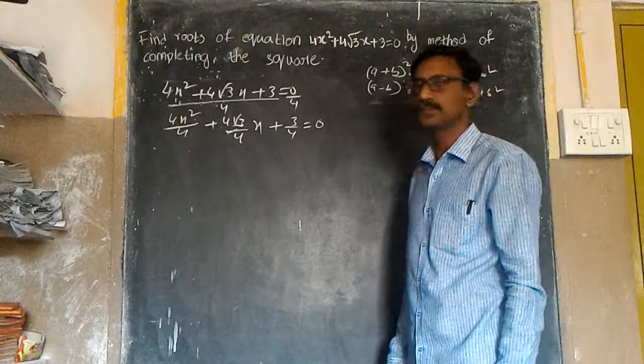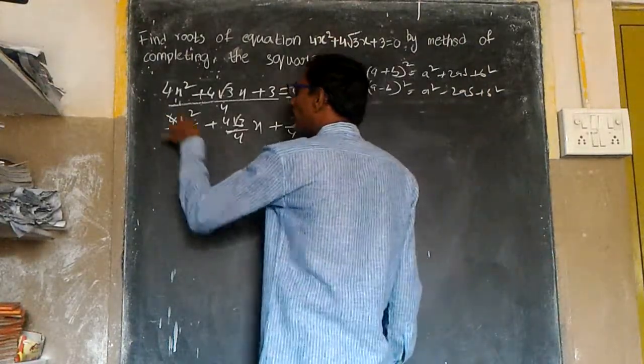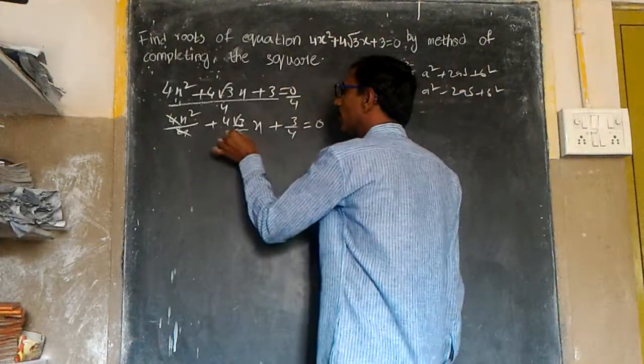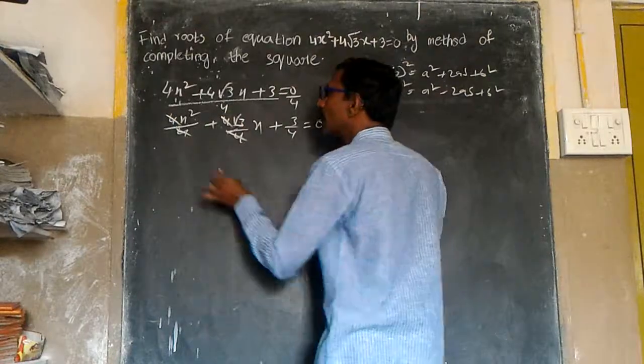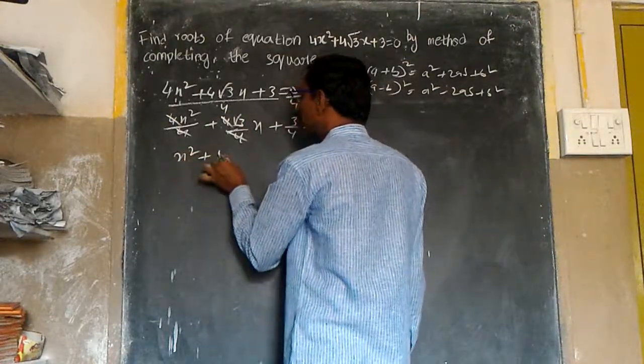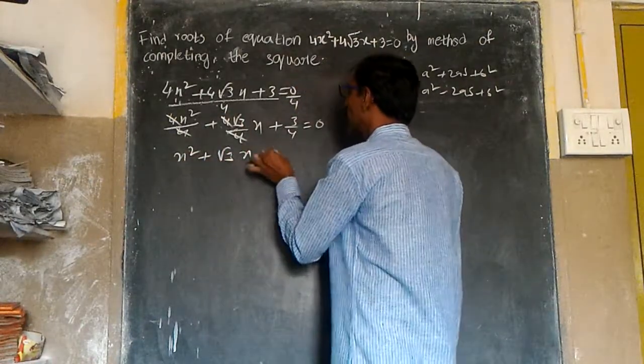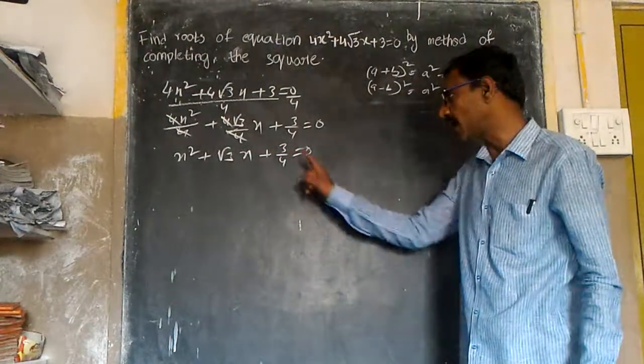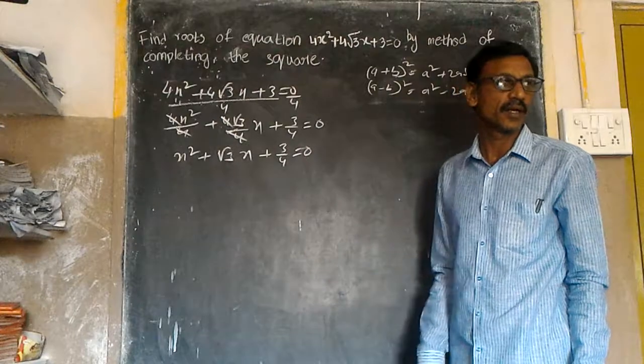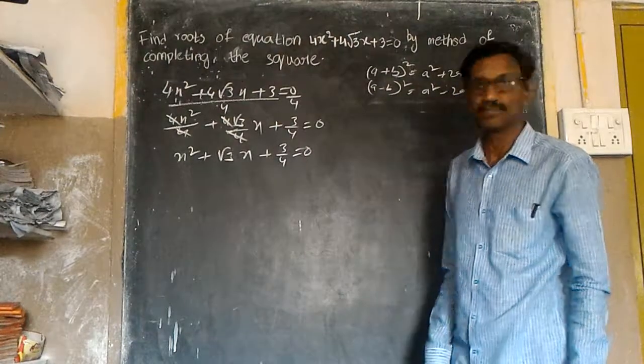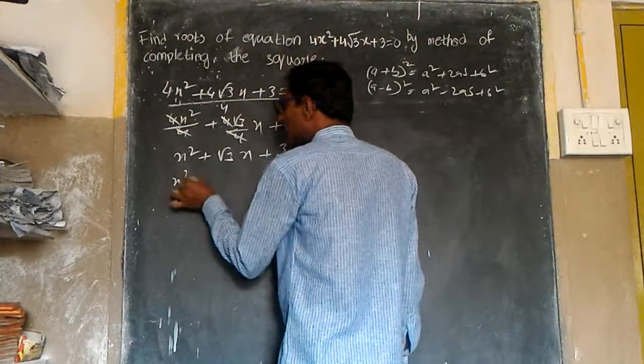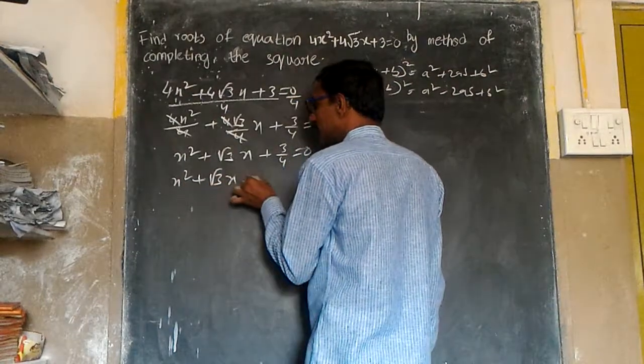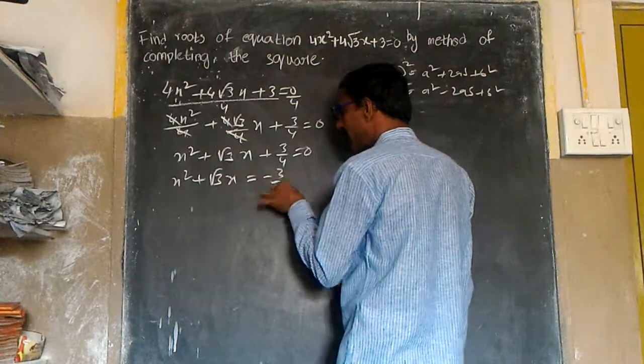After the 4's cancel, we get x² + √3x + 3/4 = 0. Next step: move the constant to the right side, so x² + √3x = -3/4.